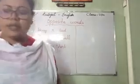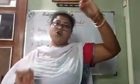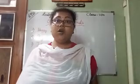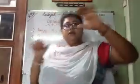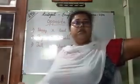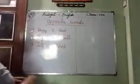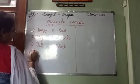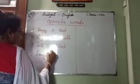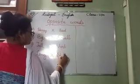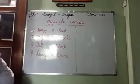One more thing is there. Long. Long. Short. Long. Short. Understand? Number four is Long — opposite is Short. Same as tall and short. Tall — Short. Long — Short. Understand?